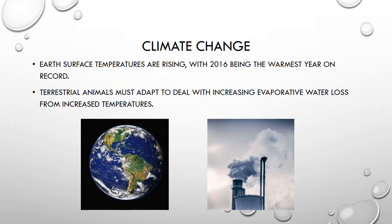There is an ever-growing body of knowledge surrounding a changing global climate. Earth's surface temperatures are rising, with 2016 being the warmest year ever recorded. Terrestrial animals must adapt to deal with increasing evaporative water loss from increased temperatures. Some large mammals in arid climates, such as camels and kudus, abandon homeothermy while in states of heat and water stress in order to minimize water loss through evaporation by allowing their body temperatures to increase during the day.